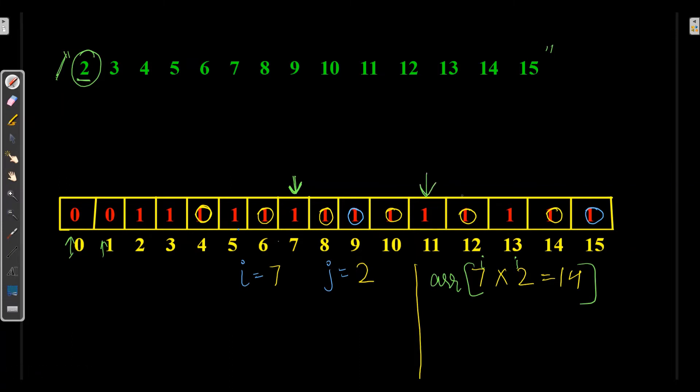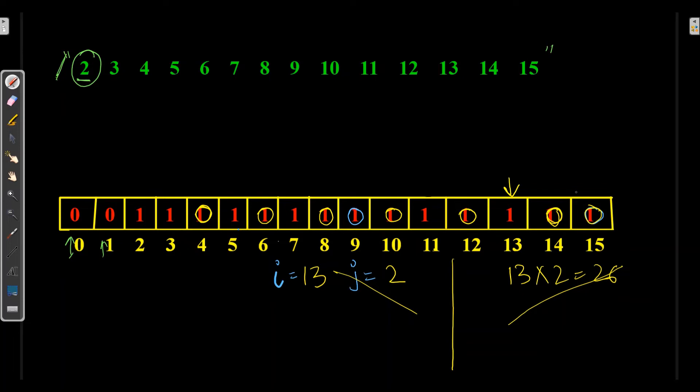The next number is 11. I equals 11, J equals 2. 11 into 2 is 22. We don't have any multiple of 11 up to 15. Then the next number is 13. 13 times 2 is 26. We don't have 26 up to 15, so multiples of 13 will be ignored. We are skipping 14 and 15 as they are already 0, being multiples of some prime number. So we have 2, 3, 5, 7, 11, and 13. These are the prime numbers up to 15. Now let's implement this in PyCharm.